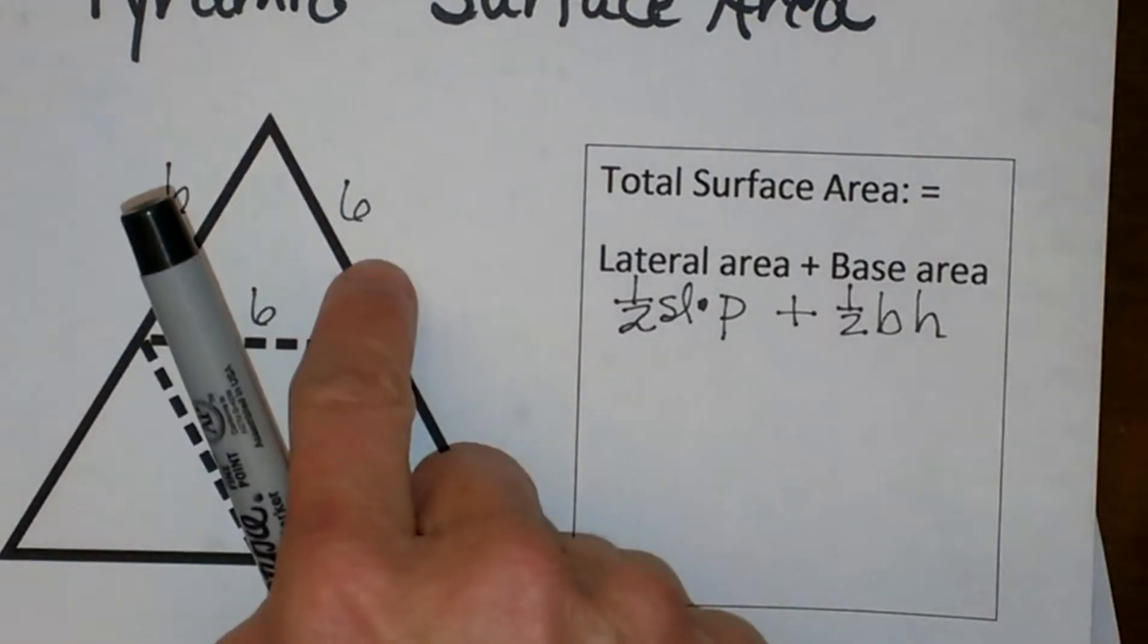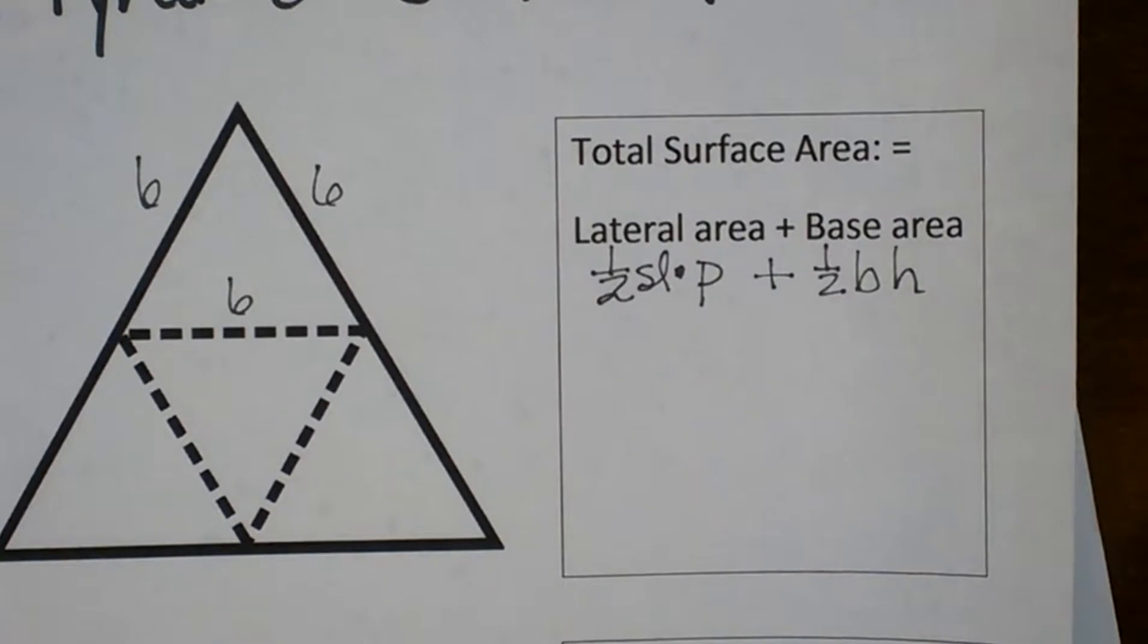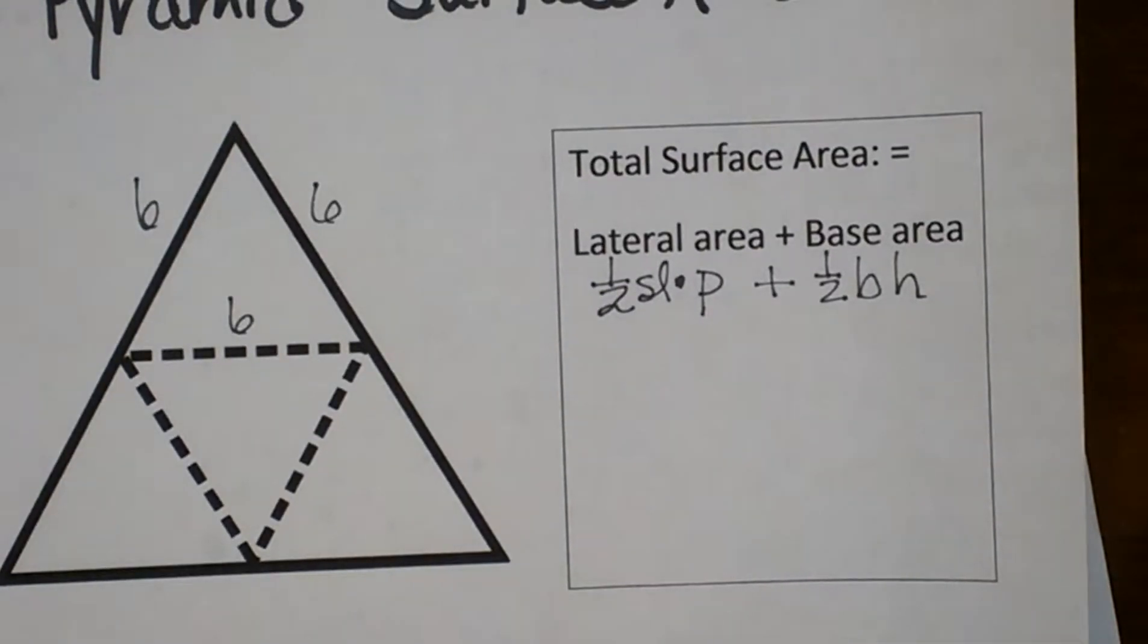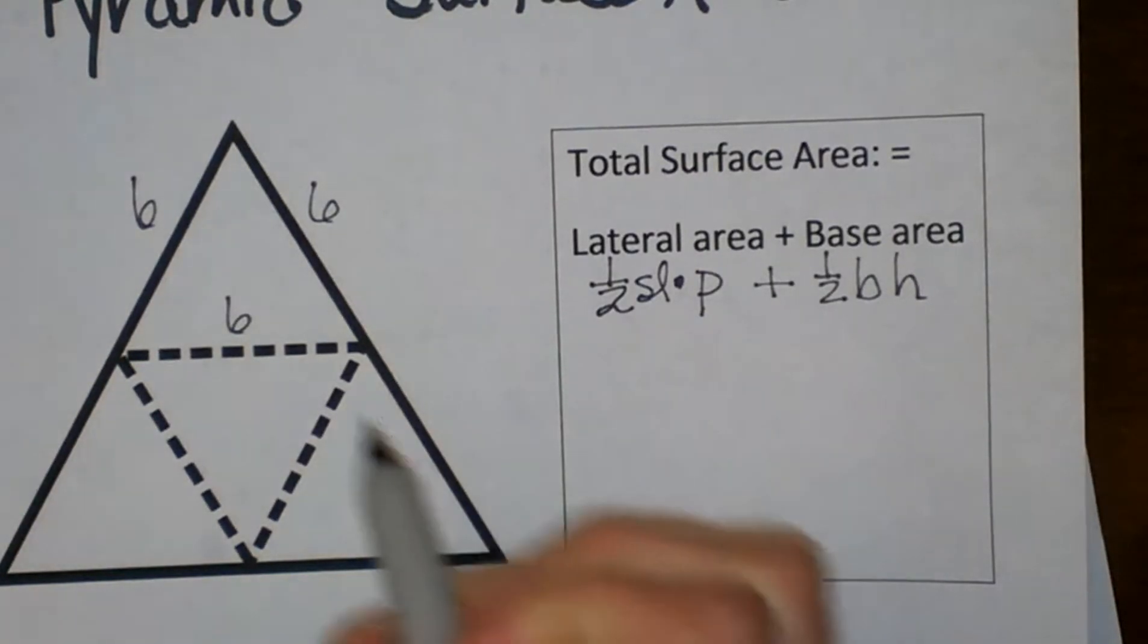So we are actually dealing with one, two, three, four isosceles triangles. So there are several ways to do this but I am just going to focus on one of the ways to do this one and then maybe we can look at a second way too.